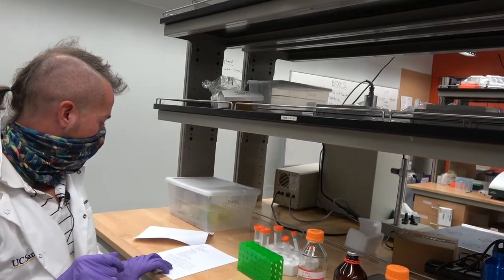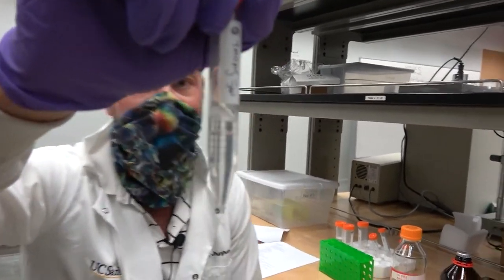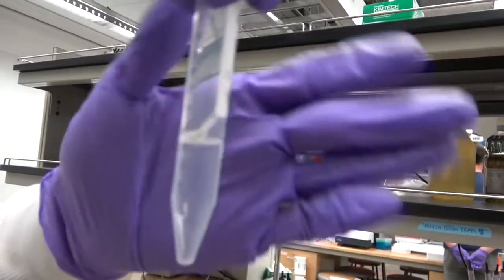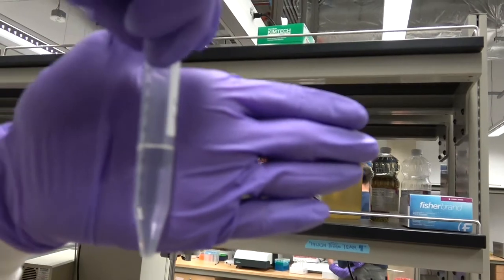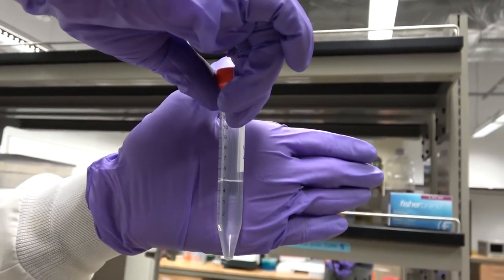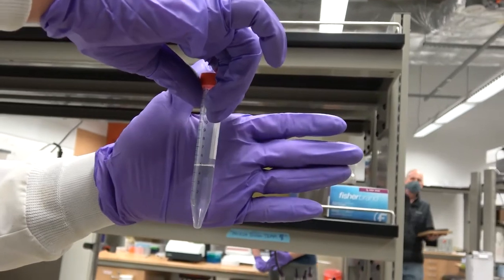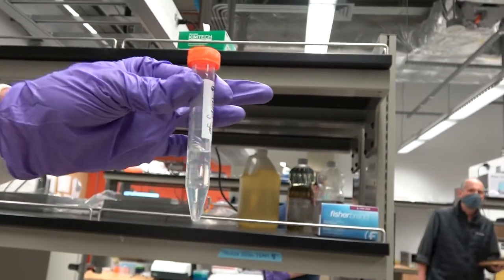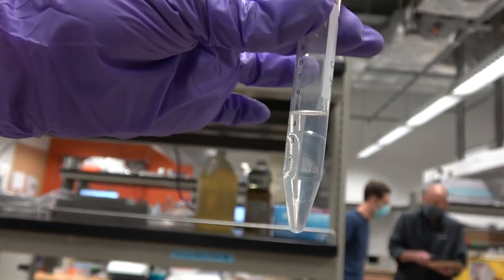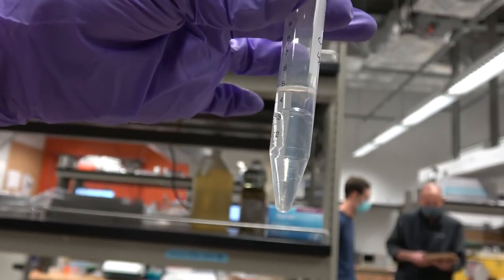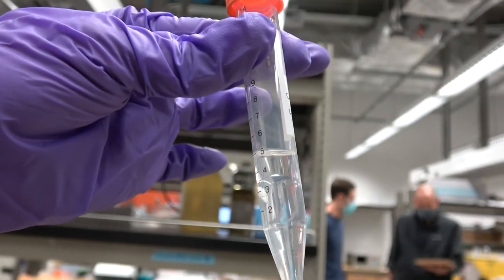Step 1b: note the miscibility. Let's see if we can get this, let me get my face out of the way. Hopefully you can appreciate that there is one layer floating on top of the other. See the little meniscus there?